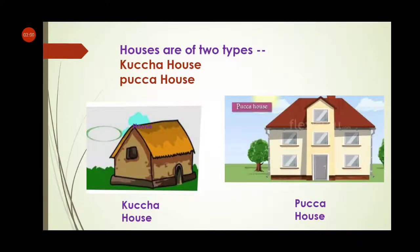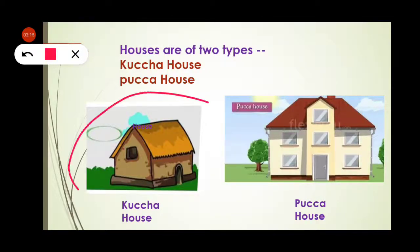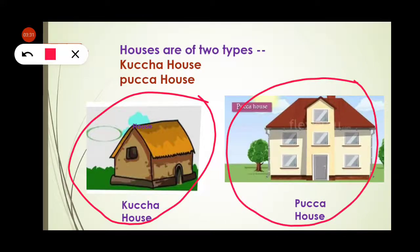Now look at this picture. We know that houses are of two types — kaccha house and pakka house. This is a kaccha house. Kaccha houses are generally made with mud, straw, bamboo, etc. And look at this picture — this is a pakka house. Pakka houses are generally made with cement, rod, bricks, steel, etc.